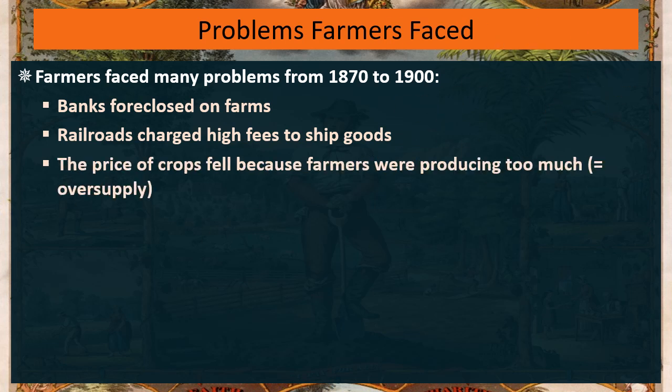There's another problem, and this is a problem farmers themselves created. Crop prices dropped because farmers were drastically overproducing. Out west, the more people farming meant the more wheat you made, which meant the value of wheat dropped. The value of corn dropped. This is a problem we call oversupply — there's just too much.